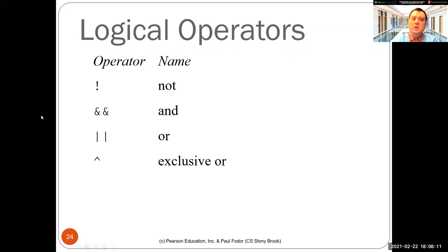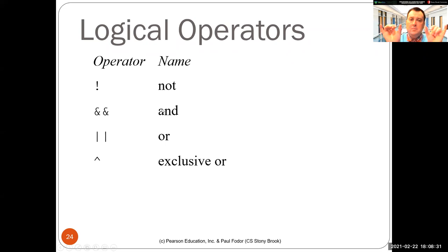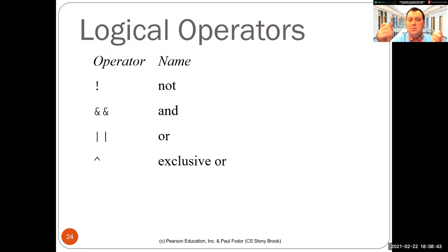The conjunction is written with two ampersand signs. There are actually two different AND signs in Java: the unconditional conjunction, which is a single ampersand, and the conditional conjunction, which is a double ampersand. One thing you know about conjunction is that both operands must be true for the conjunction to be true. So if the first one is false, there is no reason to evaluate the second one — that is what the double ampersand implements.